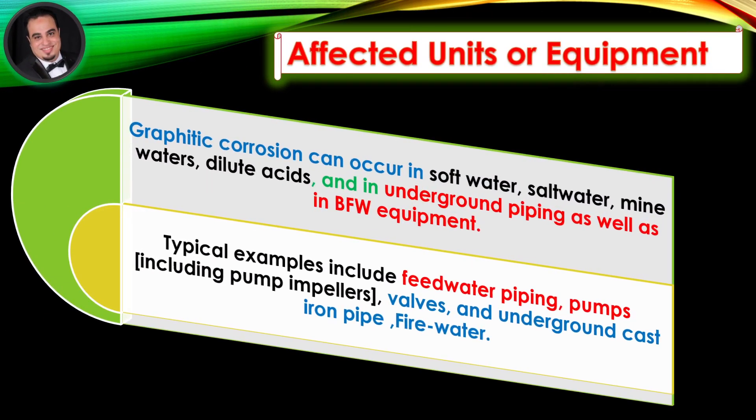Affected units or equipment: Graphitic corrosion can occur in soft water, salt water, mine waters, dilute acids, and in underground piping, as well as in boiler feed water equipment. Typical examples include hot water piping, pumps including pump impellers, valves, and underground cast iron pipe and fire water systems.